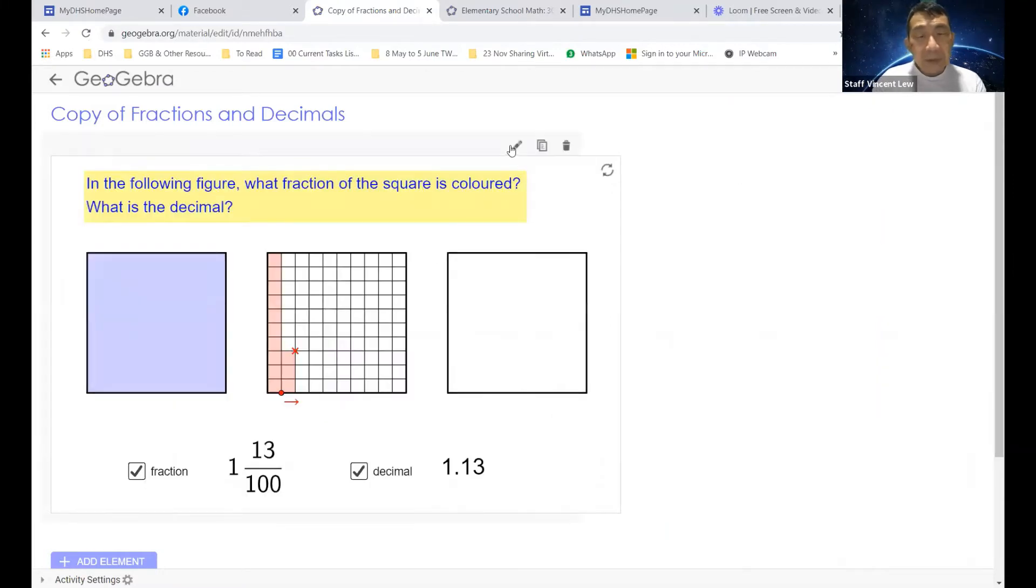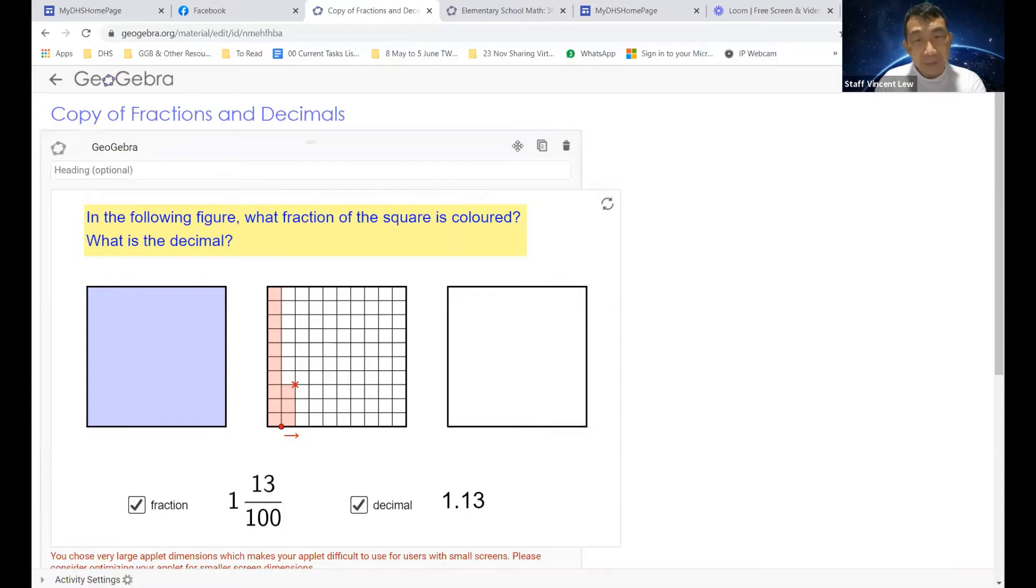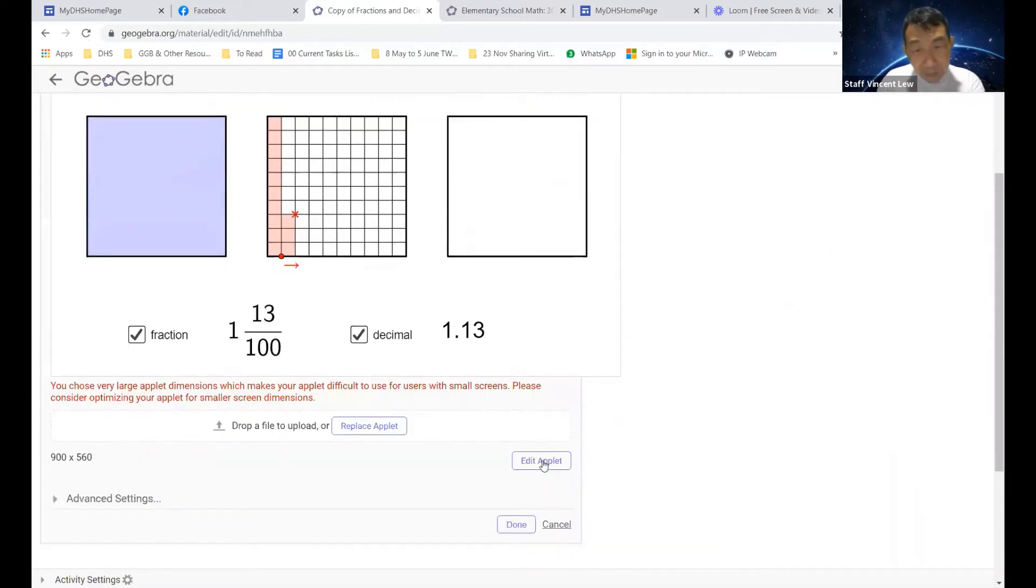Then, as our mouse hovers over the window or the frame, you can see that there's this pencil icon. Click on it, which will allow you to edit. Now you're not exactly editing yet. You need to move down to the button which says edit effort. Click on that.